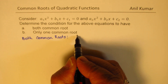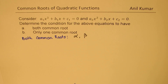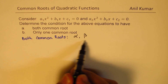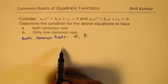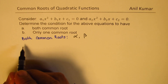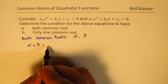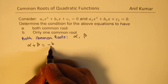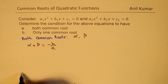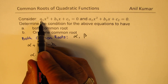Let us say the roots are alpha and beta. These are the two roots which are common to both equations. If we have two roots in common, then we know that alpha plus beta, the sum of these two roots, will be minus b over a. In the first equation, it will be minus b1 over a1.